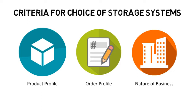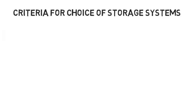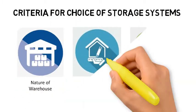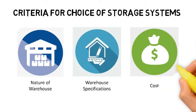Order profile: does the business have bulk orders or loose orders? Nature of business: is this a fast-moving or slow-moving business? What are the customer service requirements? The nature of the warehouse: is this a local or regional distribution center? Will there be cross-docking?